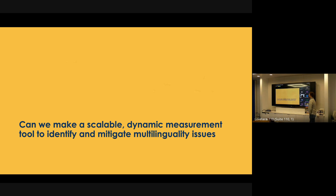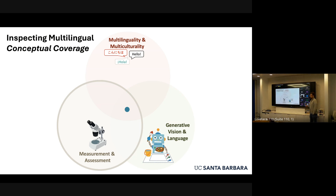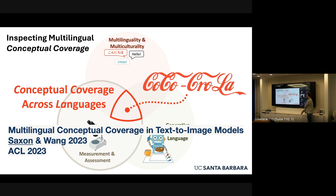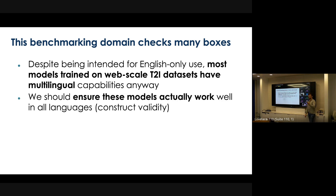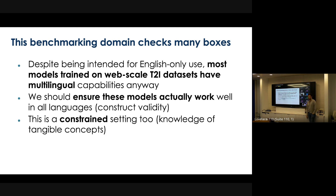The goal of this project was making a scalable and dynamic measurement tool that can identify and eventually mitigate these multilinguality issues in text-to-image models. We framed this in the idea of multilingual conceptual coverage. The project was called Conceptual Coverages Across Languages, or CocoCola. This domain of benchmarking checks a lot of the boxes we were interested in with these metrology ideals. Because these models are trained on high web-scale text-image datasets that are hard to comprehend, we want to ensure that these models work in a real domain — users asking for specific prompts — so there's construct validity here.